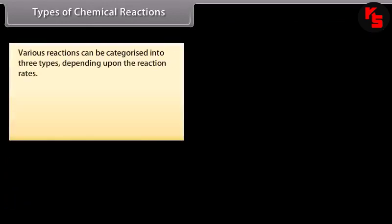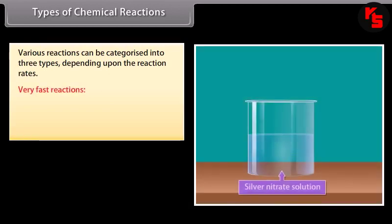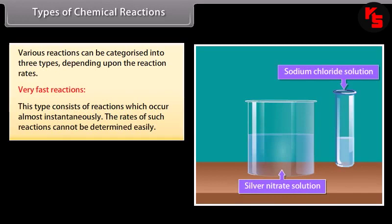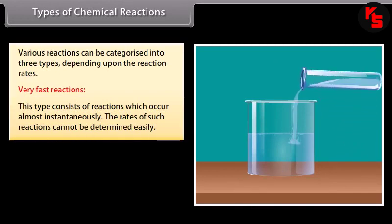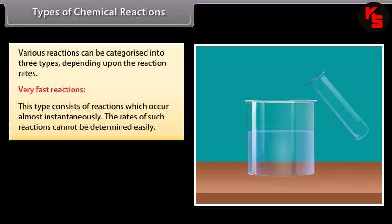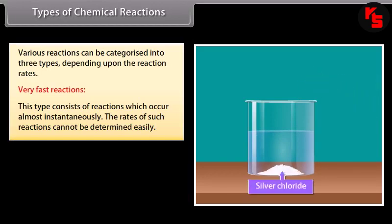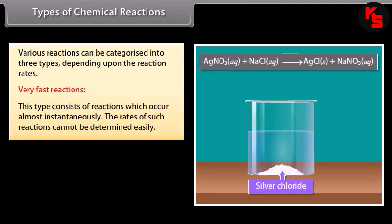Various reactions can be categorized into three types depending upon the reaction rates. Very fast reactions: this type consists of reactions which occur almost instantaneously; the rates of such reactions cannot be determined easily. For example, the precipitation of AgCl occurs instantaneously by the addition of aqueous sodium chloride to aqueous silver nitrate.